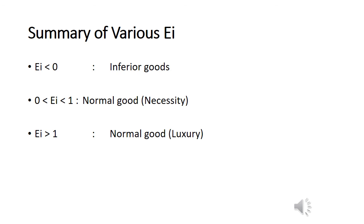This is the end of the summary of elasticity. You must be very clear about what is measured by the various elasticities. Of the three, Ep is the most complex — it has a diagram and is applied to the seller's pricing strategy. Cross elasticity measures the relationship between two goods, and income elasticity measures what type of good it is. Be very clear which elasticity measures what. Take some time to look at your tutorial questions — you'll be clearer there — and ask any questions in class. See you next week.